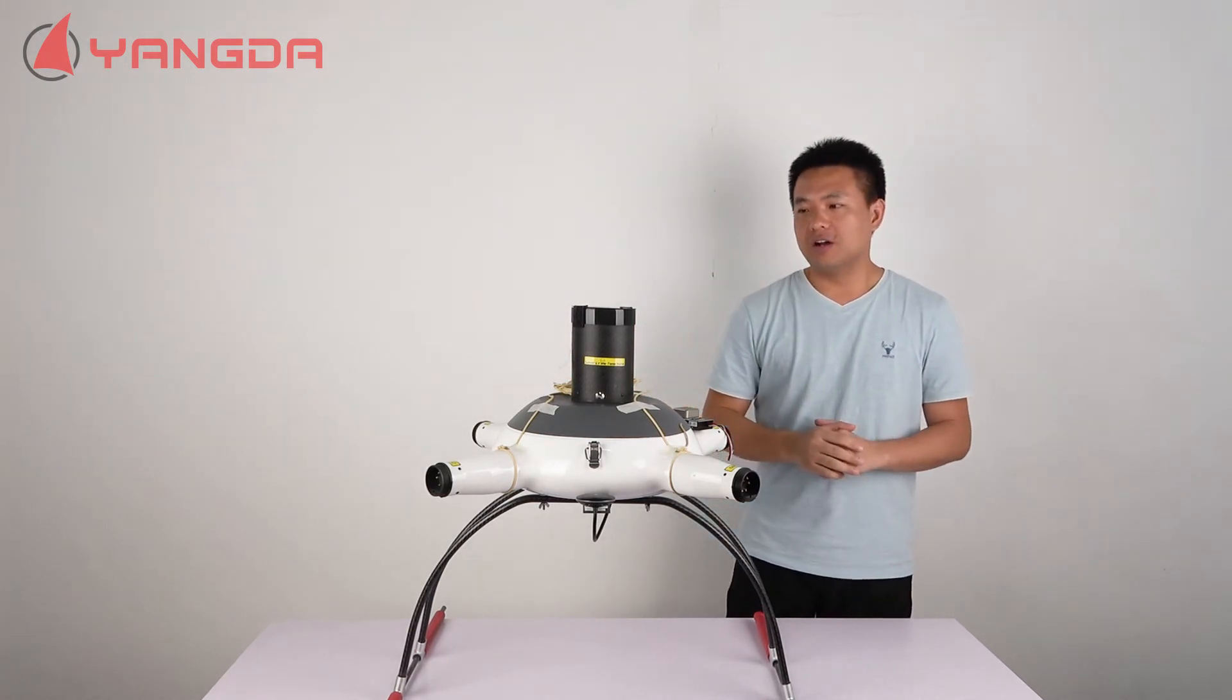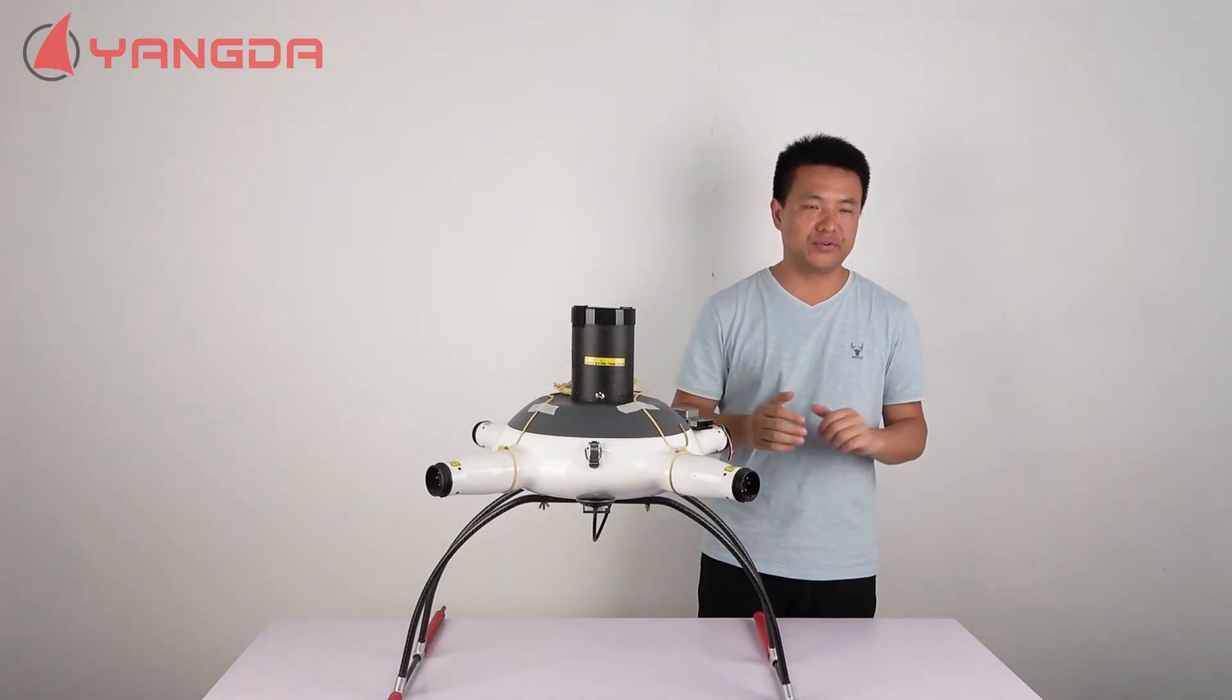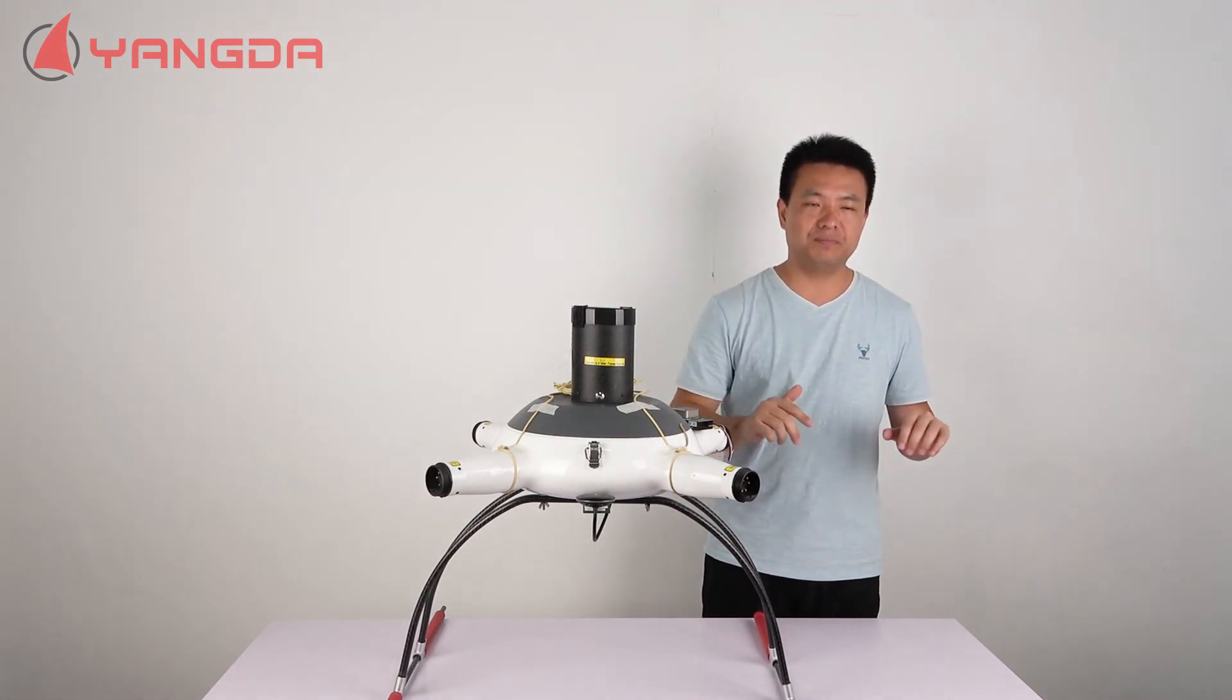Anyway, we can trigger the parachute injection manually through the RC controller or through the mission planner.